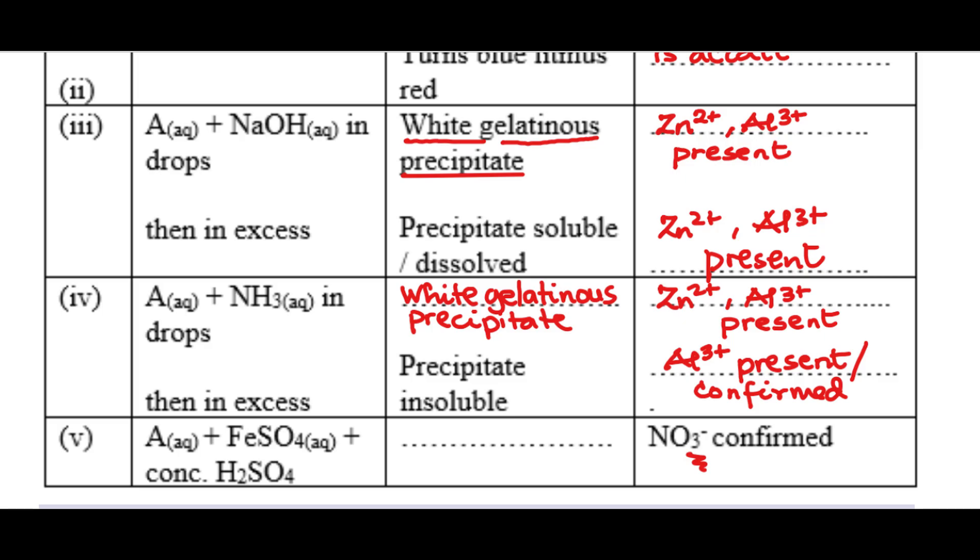We are now required to state the observation. Of course, whenever you use these reagents with an unknown solution containing the trioxonitrate 5 ion, the only observation that will confirm that trioxonitrate 5 ion is or are present is a brown ring. The formation of a brown ring, precisely at the junction of the acid and aqueous layer. I had explained the chemistry of the reaction in our last video on salt analysis made easy. Please ensure you watch it because you have a lot to learn from it. So with this, we have come to the end of this analysis. Let's see if there's any other question.